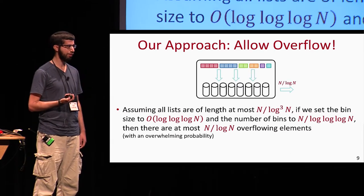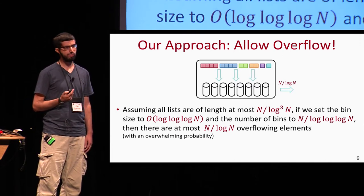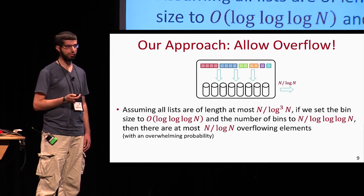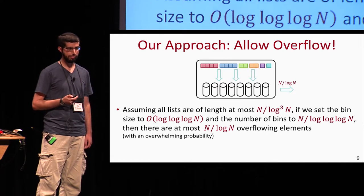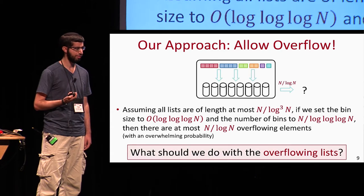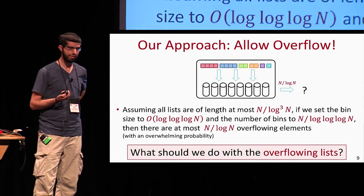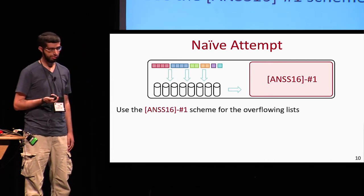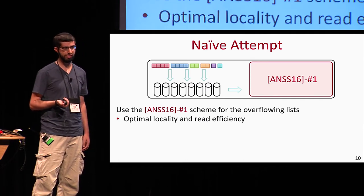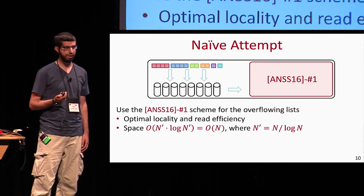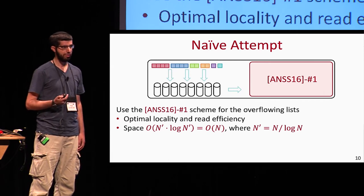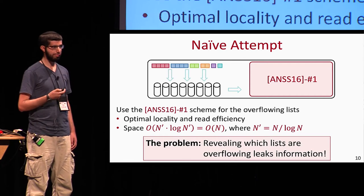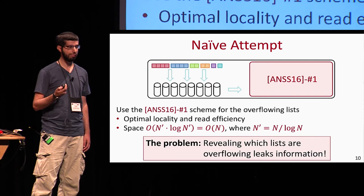Our idea is to actually allow overflow. Assuming all lists are of length at most N / log³N, if we set the size of each bin to O(log log log N) with the number of bins set accordingly, then there are at most N / log N overflowing elements. A naive attempt would be to use the first scheme of Asharov et al. for those overflowing lists, since it has optimal locality and read efficiency. Even though its space overhead is N log N, in our case the overflowing portion is only N / log N, so this only costs an additional O(N) space. However, the problem with this solution is its security, because it reveals which lists are overflowing, and this in turn leaks information about the database itself.